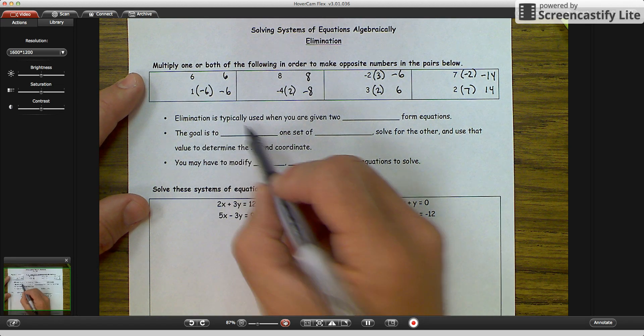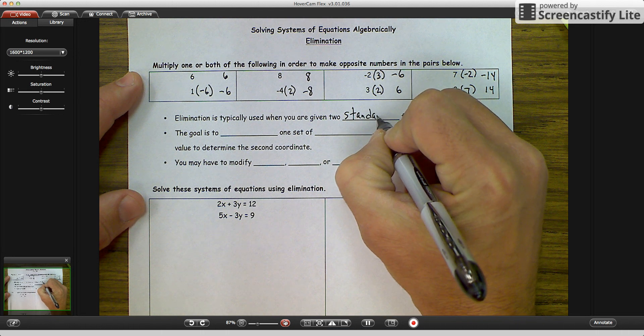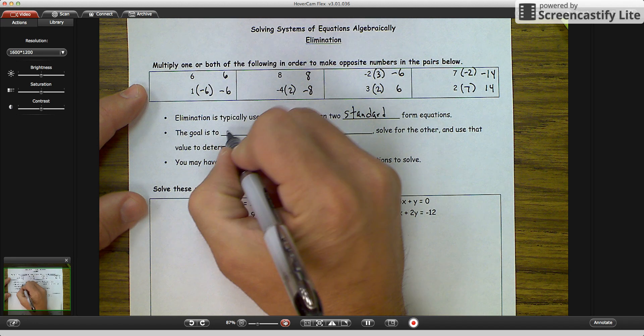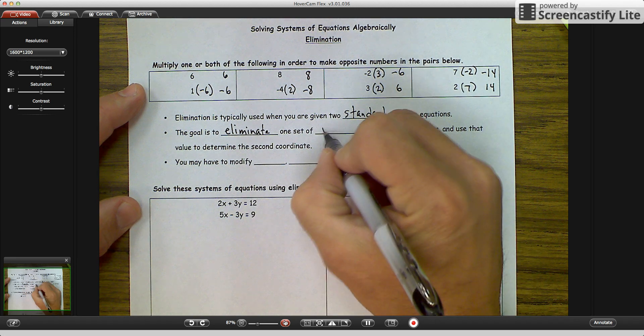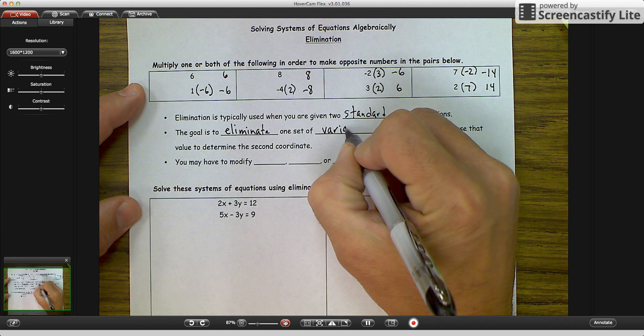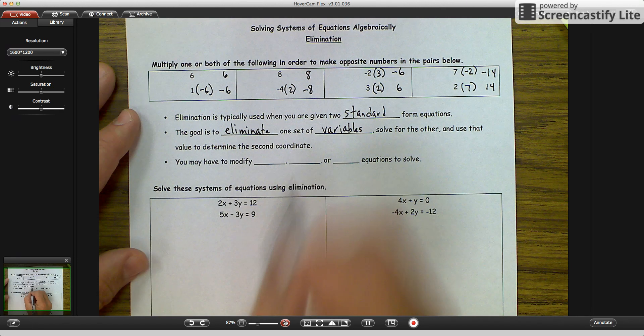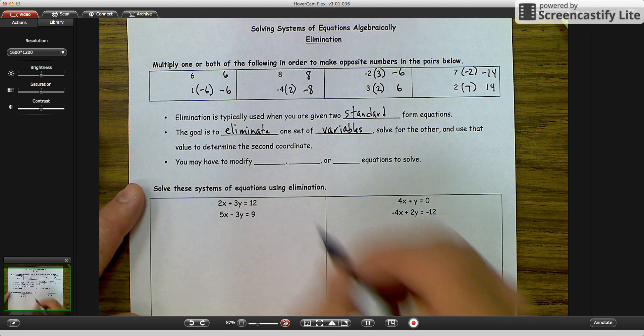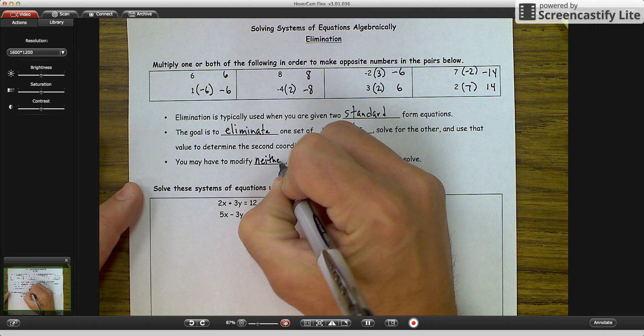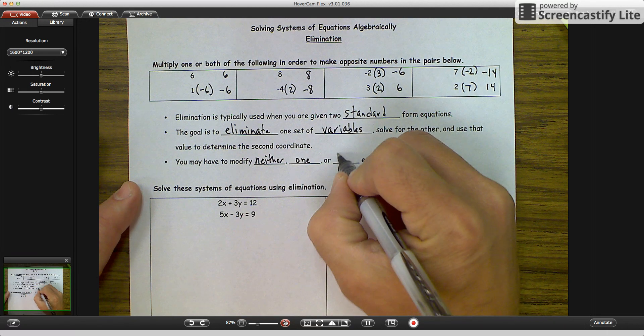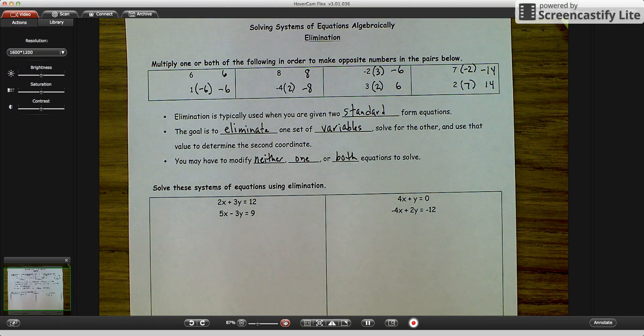So elimination is typically used when you are given two standard form equations. The goal is to eliminate one set of variables, solve for the other, and use that value to determine the second coordinate. Because again, we are dealing with coordinates. You may have to modify neither one or both equations to solve. So let's get started with some examples.